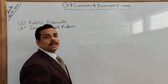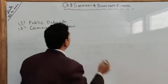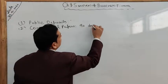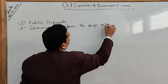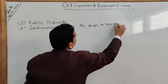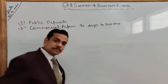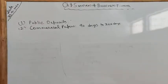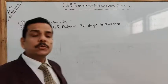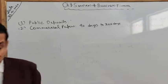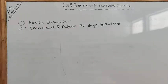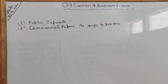Commercial paper is a way of raising funds by reputed companies from other companies, generally from 90 days to 365 days. It is issued by one firm to another, and the amount is totally unsecured — you have to rely on the performance of the other company. Firms having good credit ratings can issue commercial paper, and its regulation comes under the RBI. The merits and limitations of commercial paper are as follows.